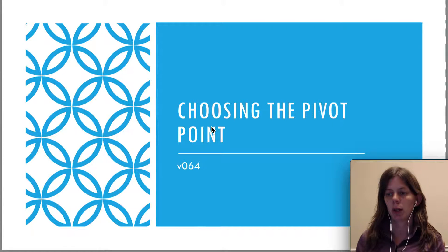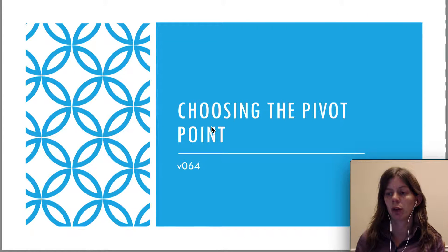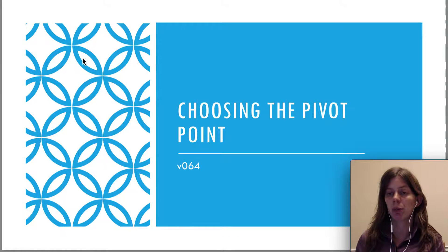Hello, this is video 64 and I'm going to be talking about choosing the pivot point. What I'm talking about is we're doing static equilibrium problems. We just talked about the two conditions necessary for static equilibrium: that the net torque is zero and the net force is zero. So now we're going to see that when we're using the condition that the net torque must be zero, we can choose the pivot point wherever we want, so we really want to choose carefully to make the problem as easy as possible to solve.